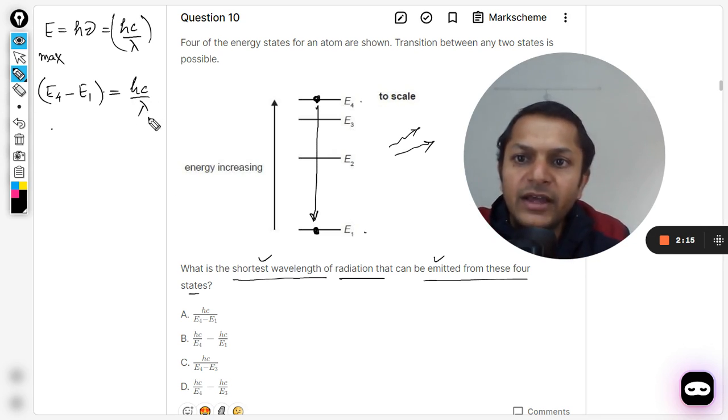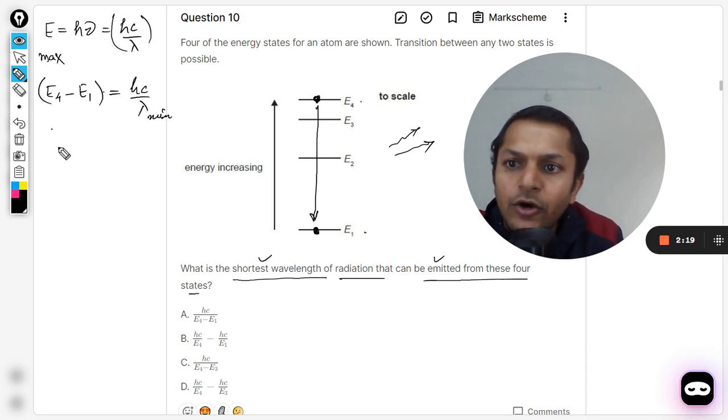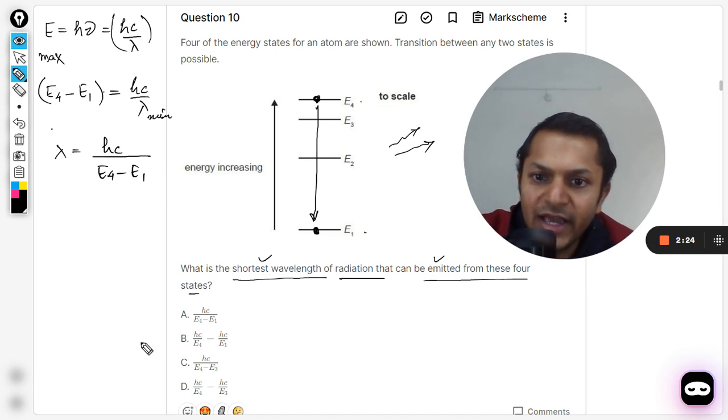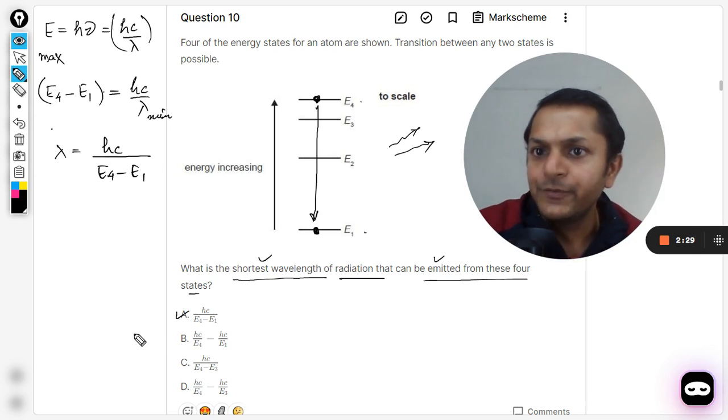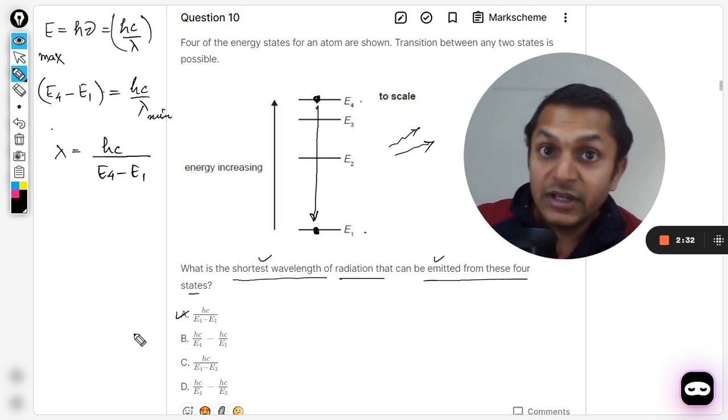Clear, so lambda is the shortest. You can write lambda minimum here. We want to find lambda, so lambda will be equal to hc divided by E4 minus E1. Do we have that kind of option here? Yes, the A option is clearly written there, so A is the correct option for this question.